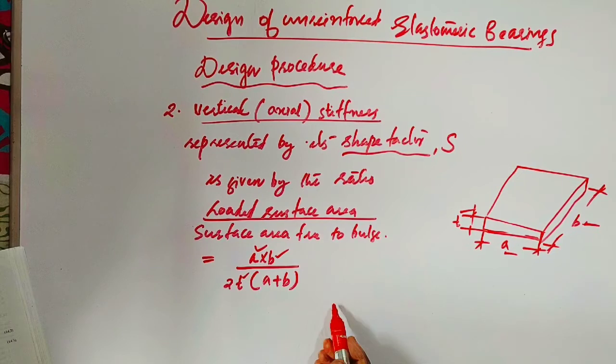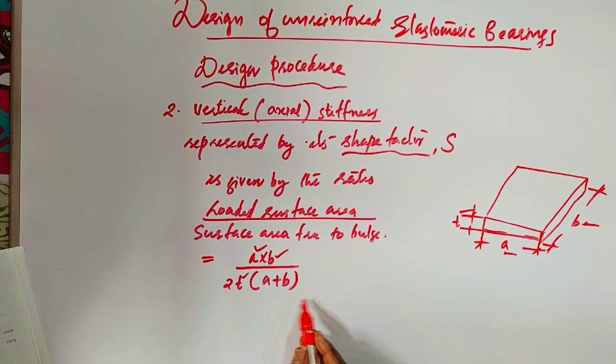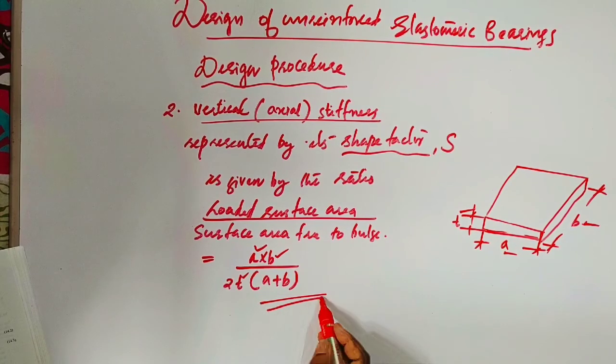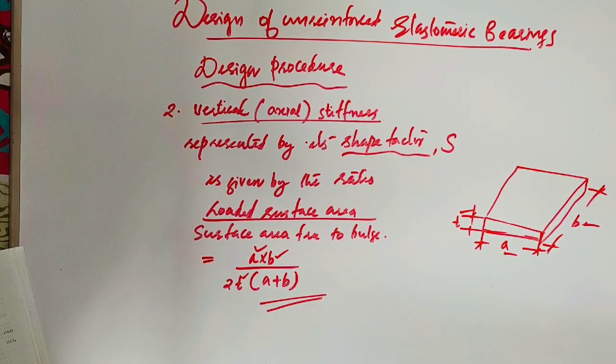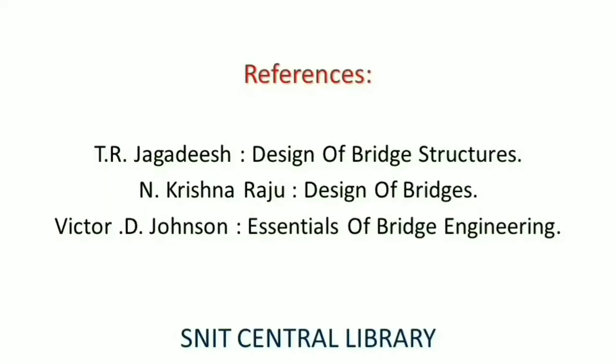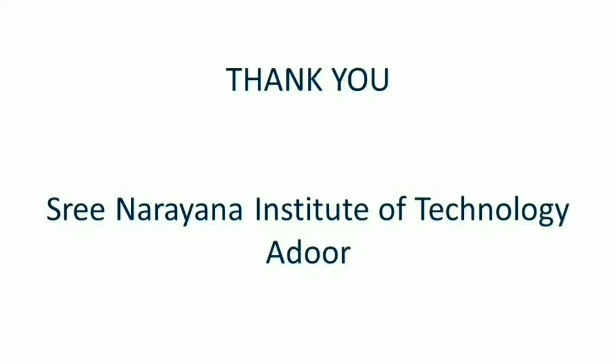Let's conclude: first step, plan dimension, and second step, vertical or axial stiffness of the elastomer. In the next session, we shall discuss the thickness of the elastomer. For more references, refer these textbooks. Thank you.